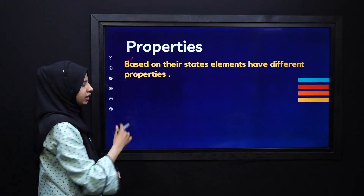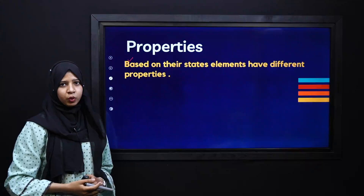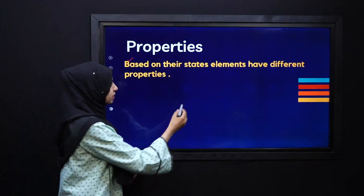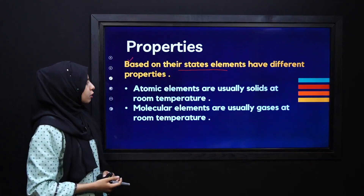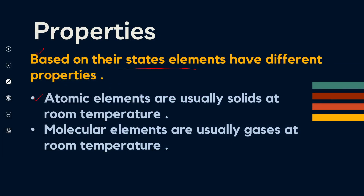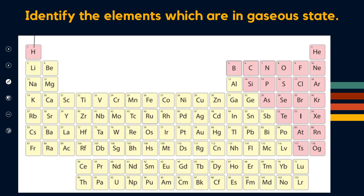Further, we have properties associated with these elements. For example, atomic elements are usually solid at room temperature, while molecular elements are usually gaseous at room temperature. Now can you tell us about how solid and gaseous elements are different?